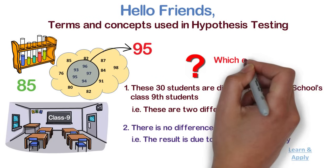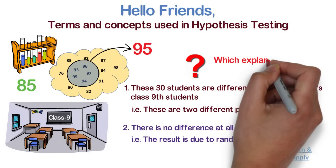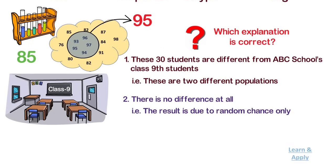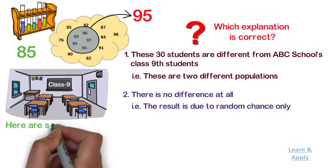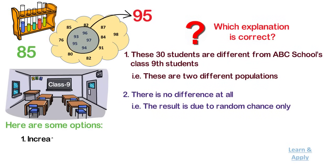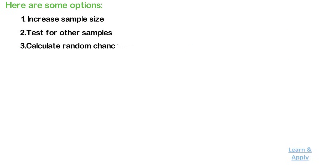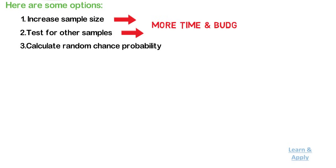How should we decide which explanation is correct? There are various methods to help you decide this. Here are some options: one, increase sample size; two, test for other samples; and three, calculate random chance probability. The first two methods require more time and budget, hence aren't desirable when time or budget are constraints.